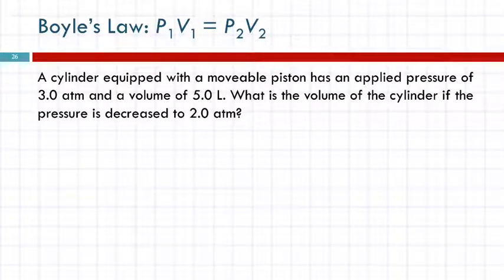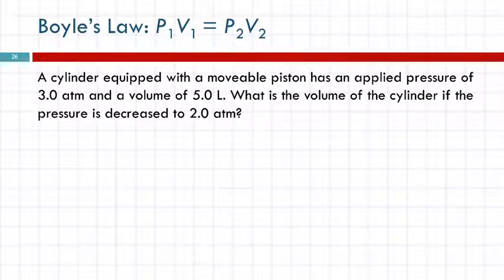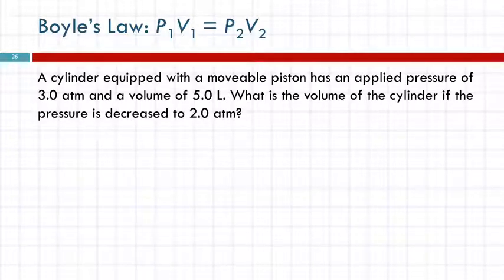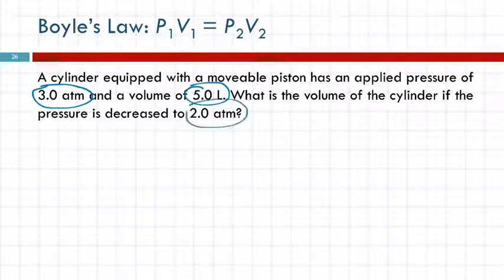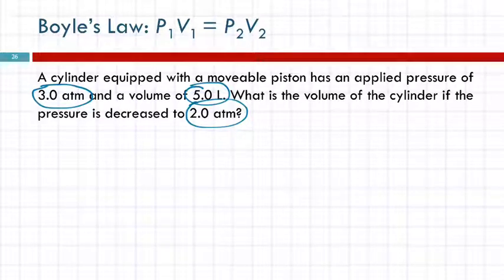So how do we use Boyle's law? There are going to be word problems. First, read the whole question: 'A cylinder equipped with a movable piston has an applied pressure of 3.0 atmospheres and a volume of 5.0 liters. What is the volume of the cylinder if the pressure is decreased to 2.0 atmospheres?' The numbers are what's important. We have a beginning pressure, ending pressure, beginning volume, and ending volume. The best approach is to make a table and put the numbers in.